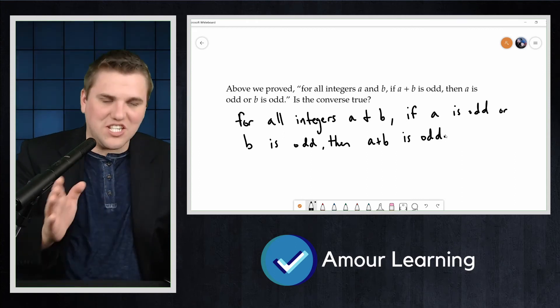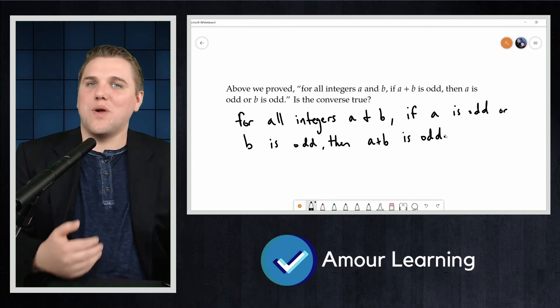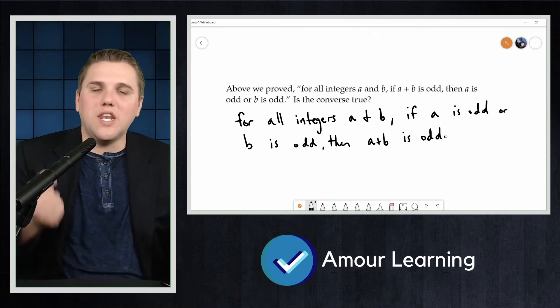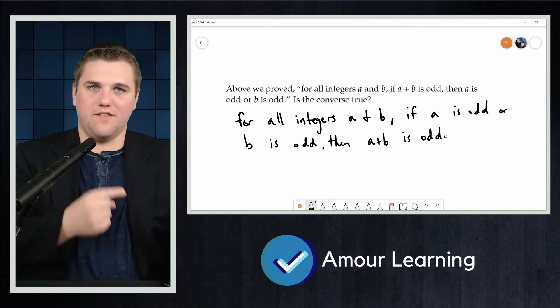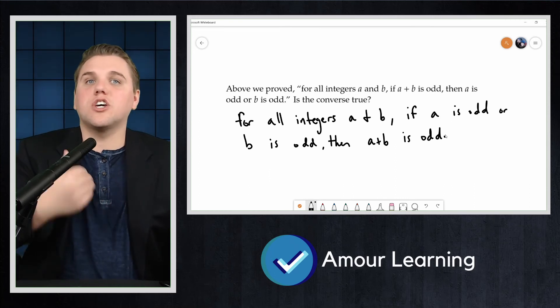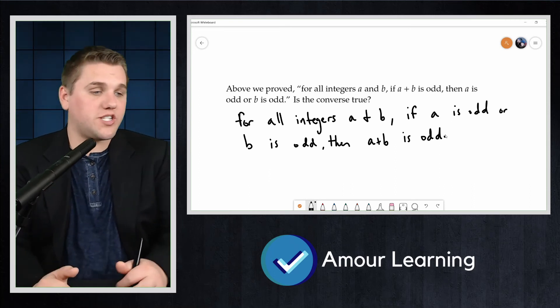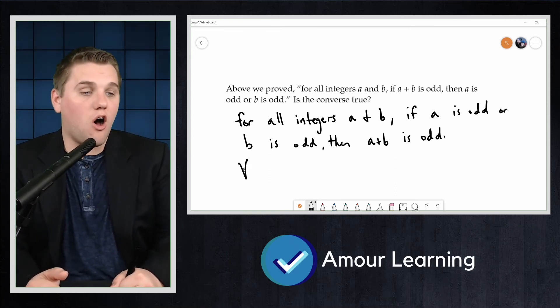If a is odd or b is odd, then a plus b is odd. Well, this is false. How do we prove it is false? We need to prove the negation of this converse. Let's look at the symbols. The converse is for all a and for all b.